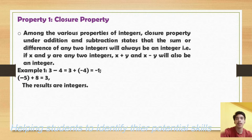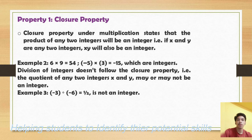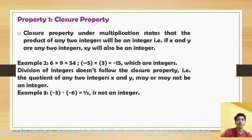Closure property for multiplication states that the product of any two integers will also be an integer. If x and y are two integers, then x times y will also be an integer. For example, 6 multiplied by 9 is an integer, and minus 5 into 3 equals minus 15, which is also an integer.